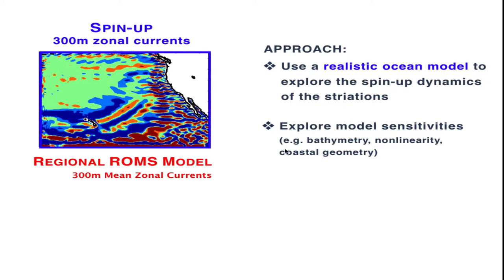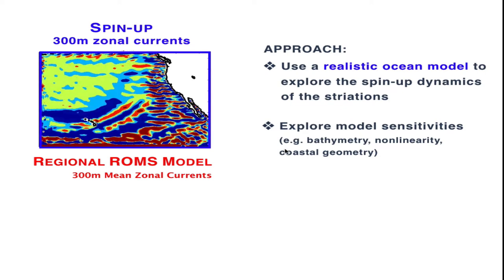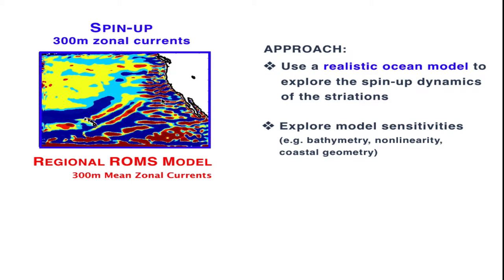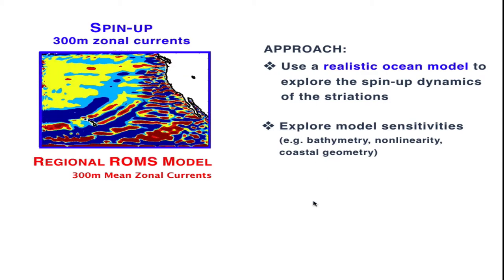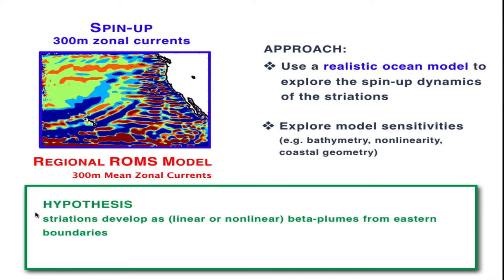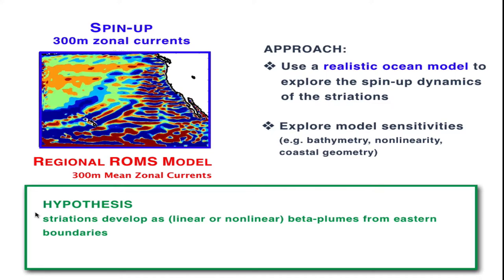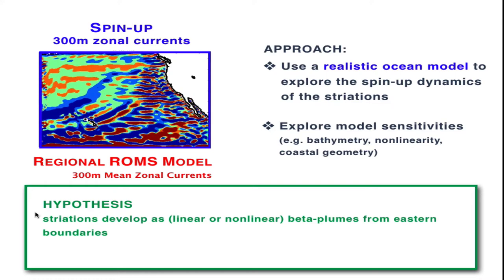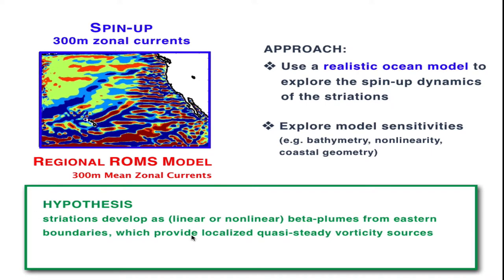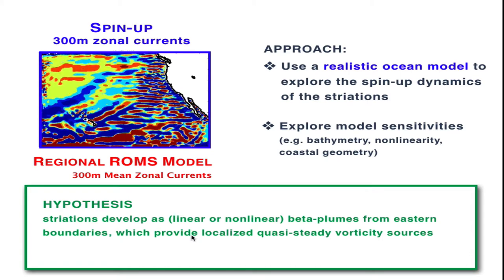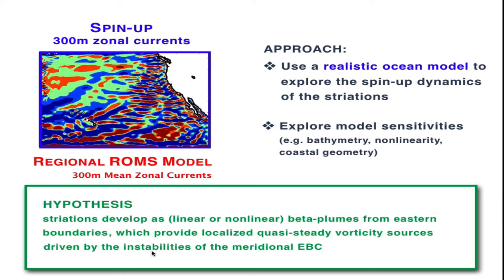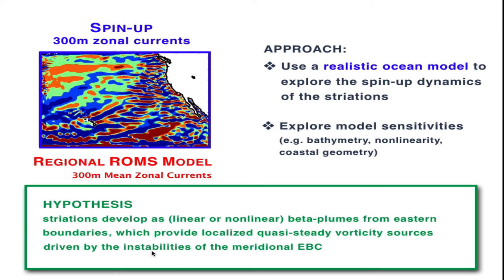If you look at this particular animation showing the 300-meter zonal currents, you see that a lot of the energy in these kind of striation-like features seems to originate from the eastern boundary. In fact, the hypothesis that we like to test with our numerical simulation is that striations develop as linear or nonlinear beta plumes from the eastern boundaries, where the eastern boundaries provide a localized quasi-steady vorticity source for these plumes, and that these vorticity sources along the eastern boundary are energized or driven by the instabilities of the meridional eastern boundary current.